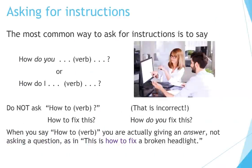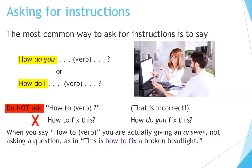Asking for instructions. The most common way to ask for instructions is to say 'How do you' or 'How do I.' Do not say 'how to' — that is incorrect. For example, 'How to fix this' is wrong. The correct way is: 'How do you fix this?'